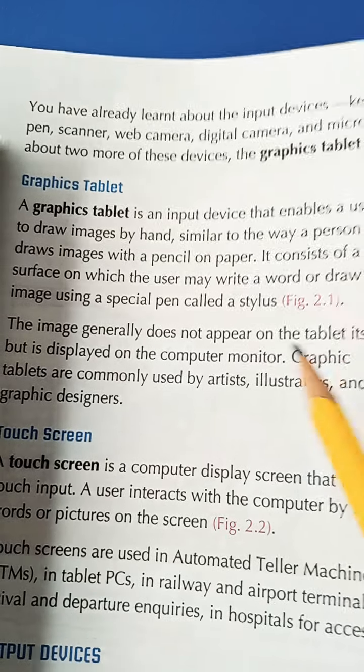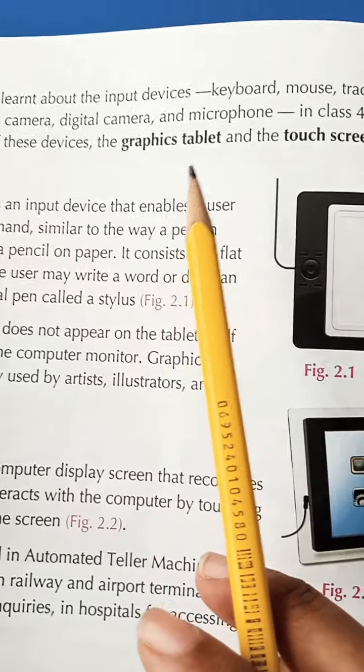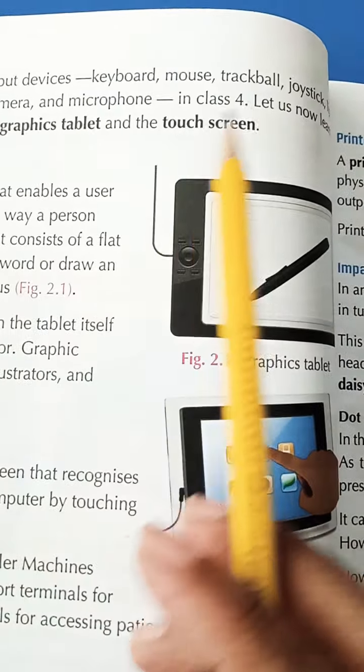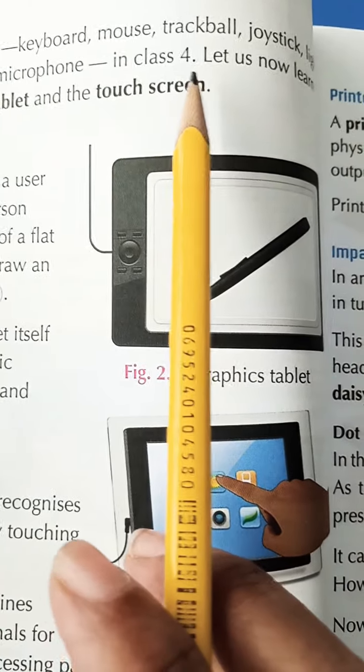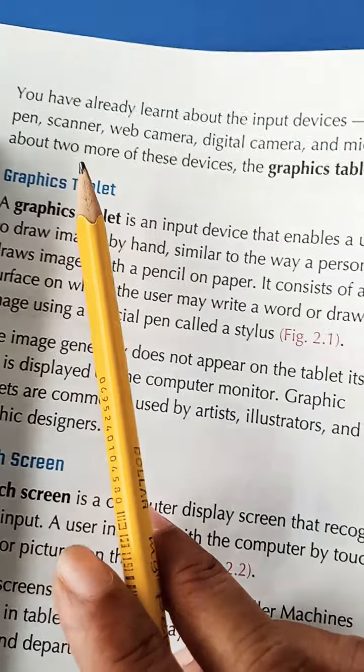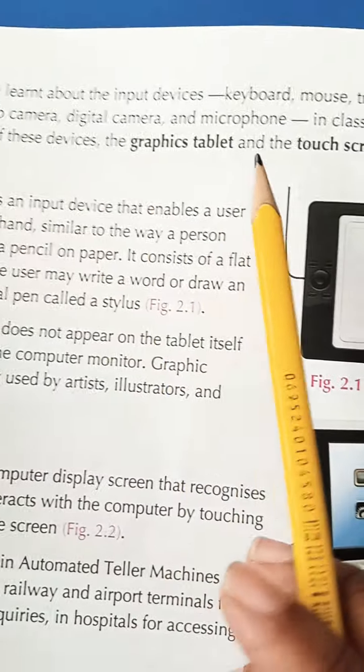Turn the page. Acha beta, aap input devices ke baare mein pehle pard chukke hain. For example, keyboard, mouse, trackball, joystick, light pen, scanner, web camera, digital camera and microphone.